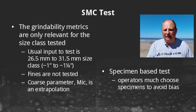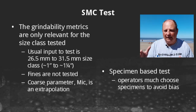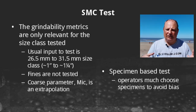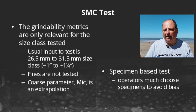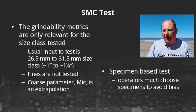The feed that goes into the SMC test dictates the size class where it's actually making a measurement. The feed is normally about 26 to 31 millimeters; everything finer than 26 millimeters is discarded. The coarse parameter MIC might be used to size primary crushers with a feed of around 150 millimeters — but the 150 millimeter size class doesn't appear in the SMC test. So you're extrapolating from that 30-odd millimeter size range up to 150 millimeters, and you have to hope that extrapolation is valid for your ore, because those extrapolations are always ore-specific.